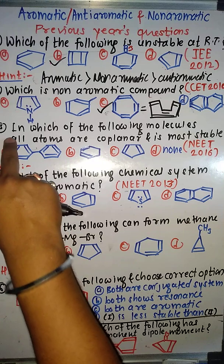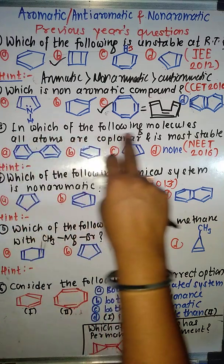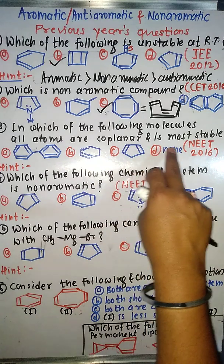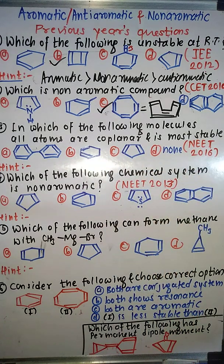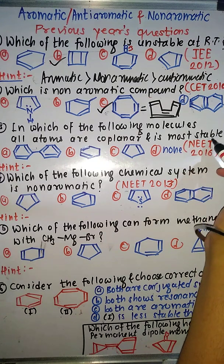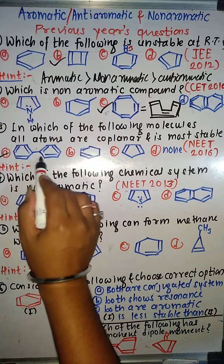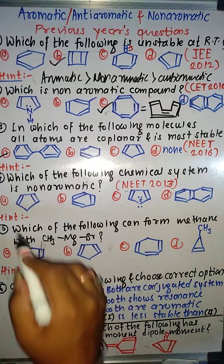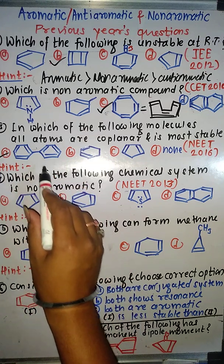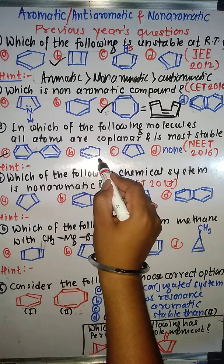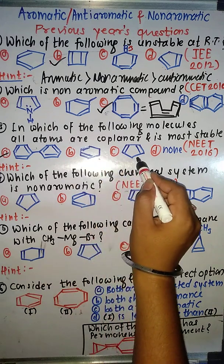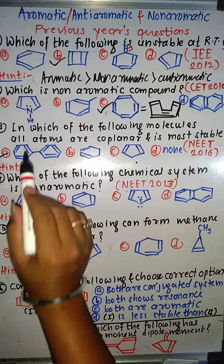The next question is: in which of the following molecules are all atoms co-planar and is it more stable? Co-planar means all SP2 hybridized carbons — if it is SP2 hybridized, we can say it is co-planar. Co-planar is an aromatic condition. In option A, this is a cyclic, conjugated, planar, all SP2 hybridized compound with an odd number of pi bonds — this means aromatic.